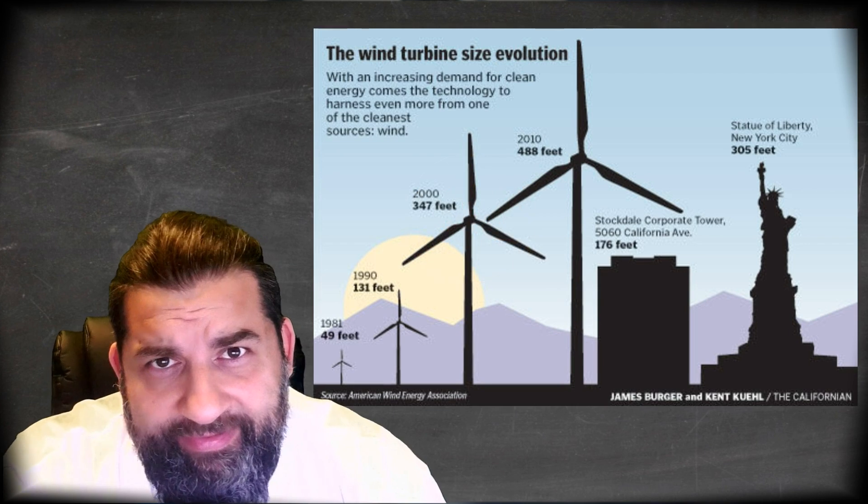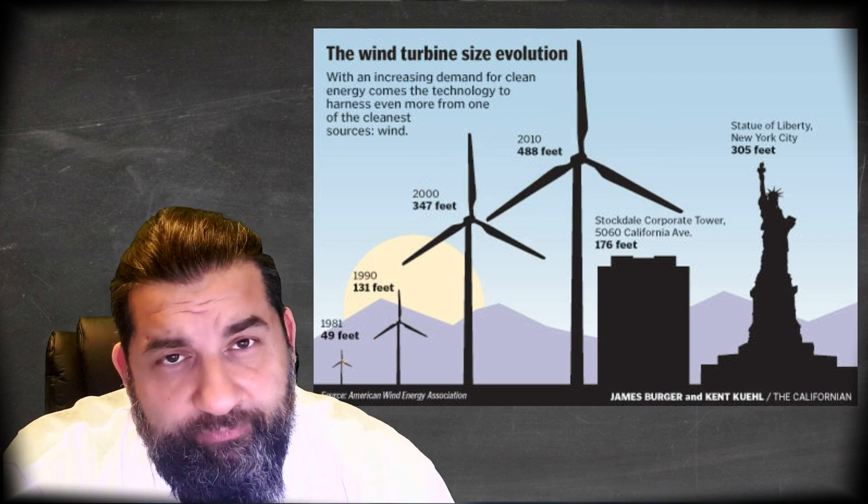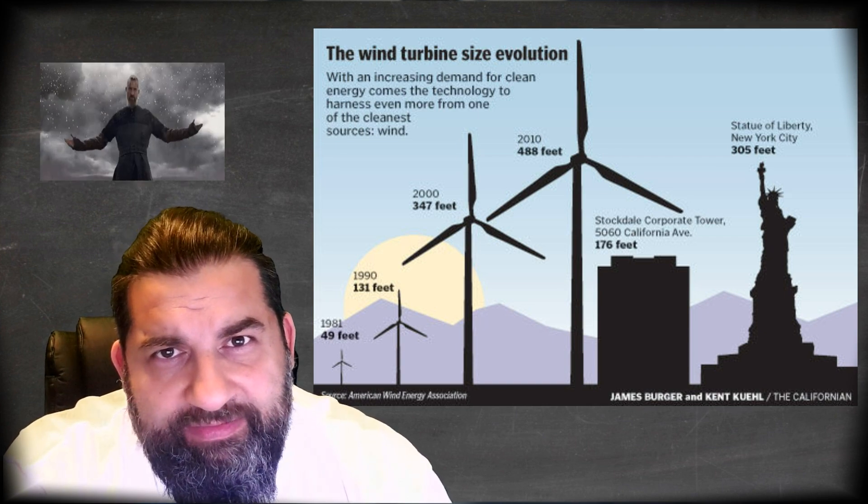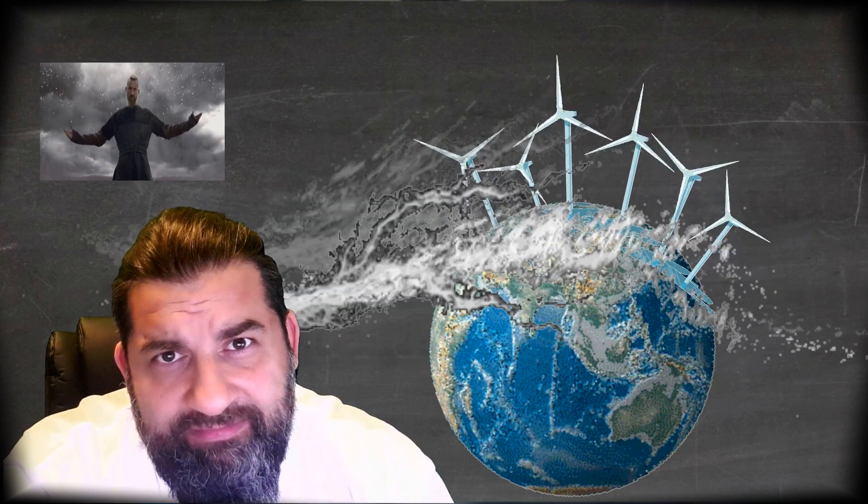And when you put up all those windmills and they are big now, they are twice the Eiffel Tower some of them, and they are really powerful and really big. But it always goes against mother nature, otherwise it wouldn't make energy. So it turns around with incredible power. This power will slow down the Earth.